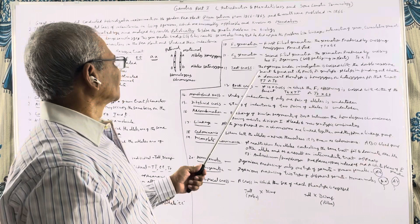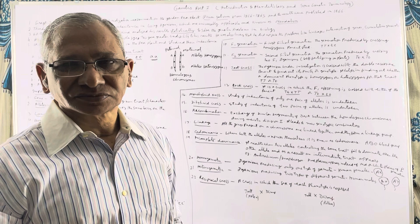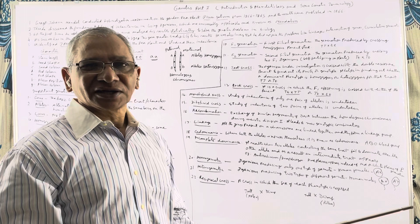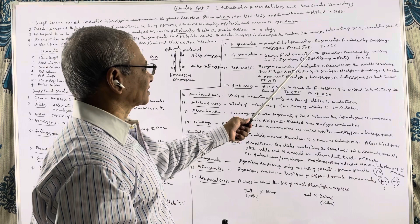F2 generation means the second filial generation — the progeny of the F1 generation. F2 generation is produced by crossing two F1 plants or two F1 organisms. In plants, this is carried out by self-fertilization.